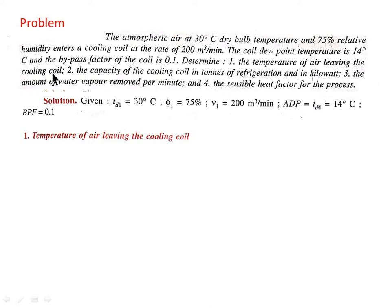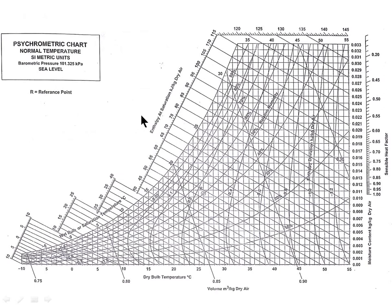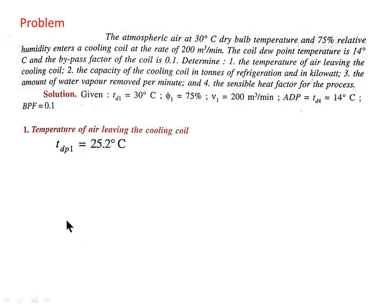Now we need to determine the temperature of air leaving the cooling coil. On the actual psychrometric chart we can plot the condition of entering air at 30°C dry bulb temperature and 75% relative humidity, giving us point number 1. At point 1, the dew point temperature on the saturation curve equals 25.2°C.